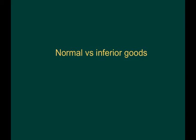When looking at normal versus inferior goods during a rotation analysis—not a parallel shift—you have to be much more careful because your income could actually increase and you could consume more of a good, yet it could still be inferior. What we're really looking at is the change from the income effect to tell us whether it is a normal or an inferior good.